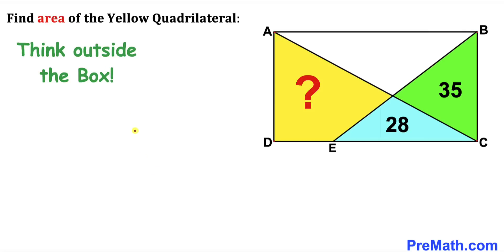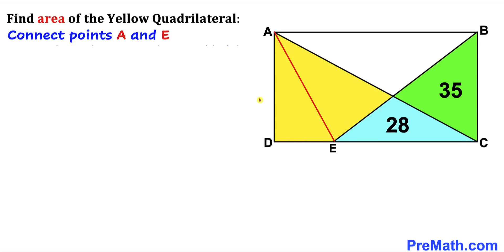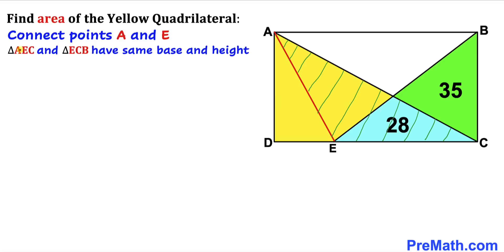Since we are dealing with this challenging kind of problem, we are going to be creative and think outside the box. Let's connect points A and E by drawing a line segment between them. Here's our much nicer looking diagram. Now let's focus on triangle A, E, C as you can see here.